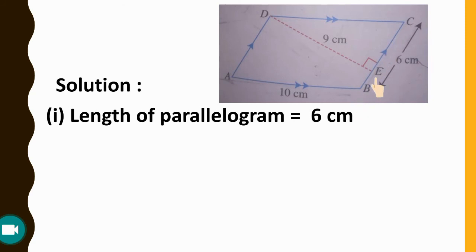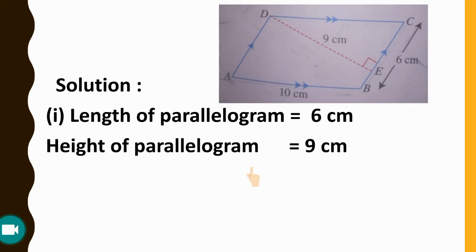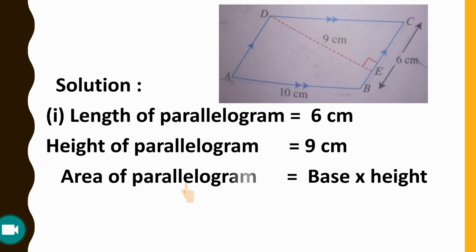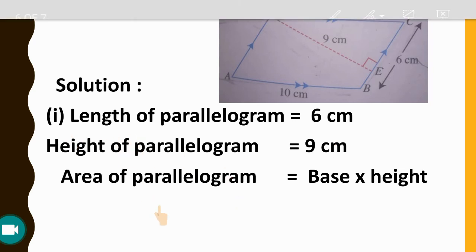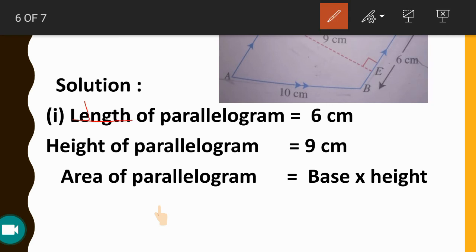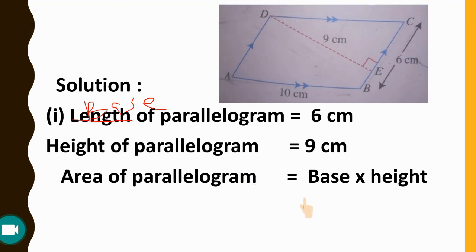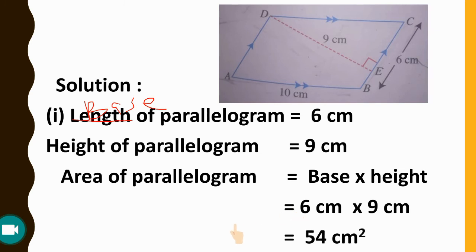The length of the base BC is 6 cm and the height is 9 cm. So the area of the parallelogram equals base multiplied by height: 6 cm multiplied by 9 cm equals 54 cm². The unit is centimeter squared because two centimeters multiplied together give centimeter square.